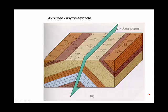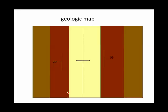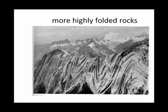Here we have an anticline, but the two limbs of the anticline have different dips — the left side is dipping 20 degrees while the right side is dipping 55 degrees. In this case it's asymmetrical, and the axis of the fold is at an angle. If you were to see this on a geologic map, it would look like this — once again, this is the symbol for an anticline.